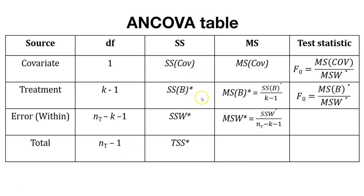We get sums of squares from the output: for the covariate, between treatments, within treatments, and the total. We calculate mean square values by dividing sums of squares by degrees of freedom, just as in ANOVA and regression. Then we calculate the test statistics by dividing the mean square values by the error mean square. So for the ANCOVA, we'll have two tests that we run.